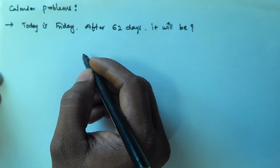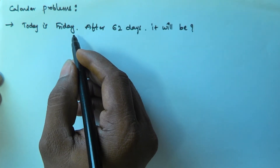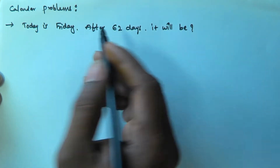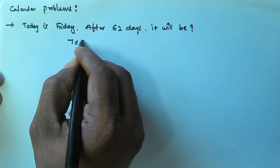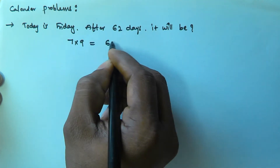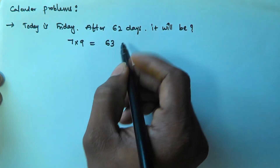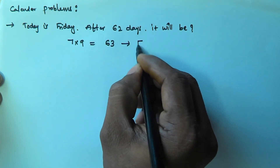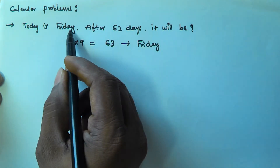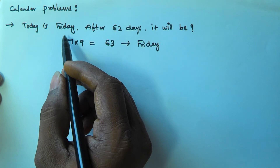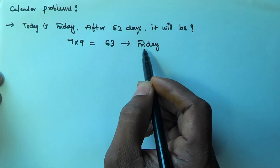We know that after every 7 days the weekday is repeated. So today is Friday, and 7 into 9 is equal to 63 days. If today is Friday, then after 63 days it is also going to be Friday — because the weekday repeats after every 7 days, and 7 nines are 63.